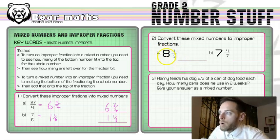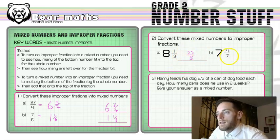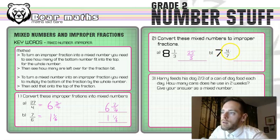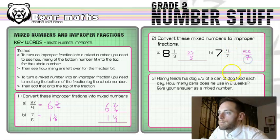So the three gets multiplied by the eight, which is 24. Add that to the top as 25. And then it's still all out of three. And there's our improper fraction. It's top heavy now. And in the second question, we've got seven multiplied by seven is 49 plus the four is 53. And that will be out of seven.